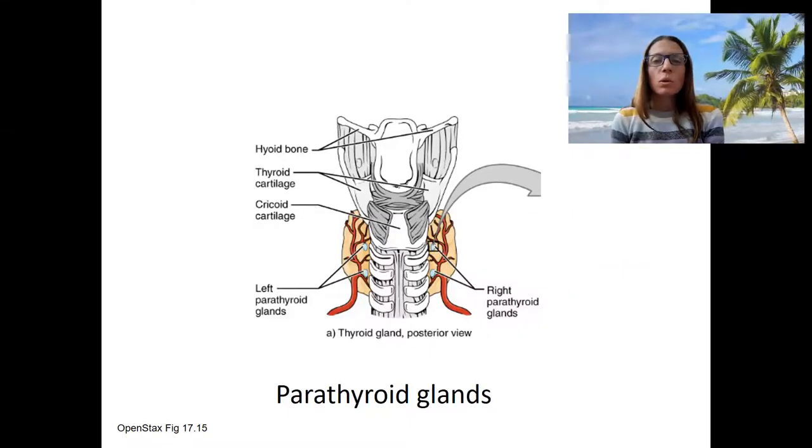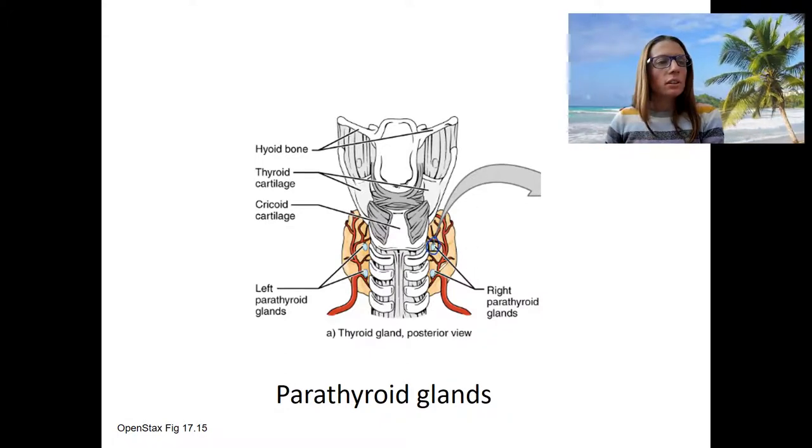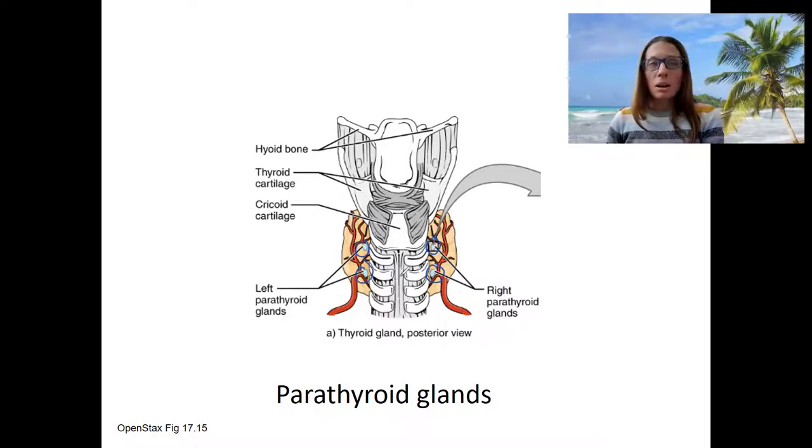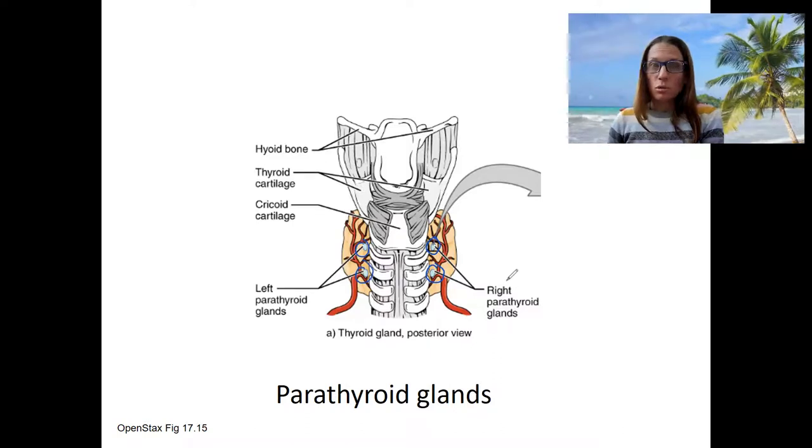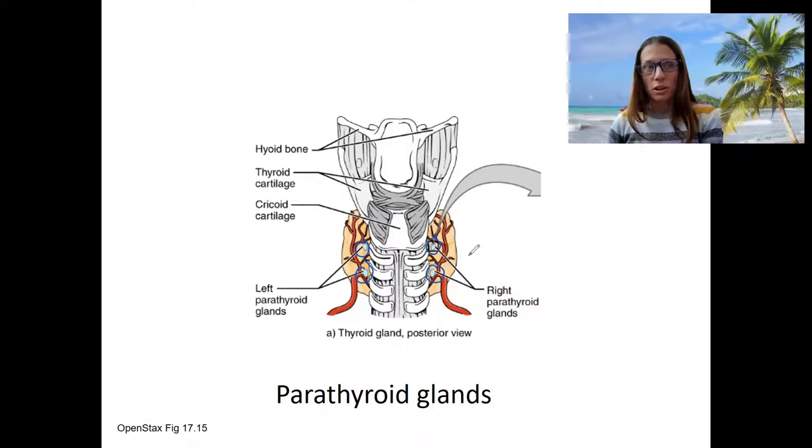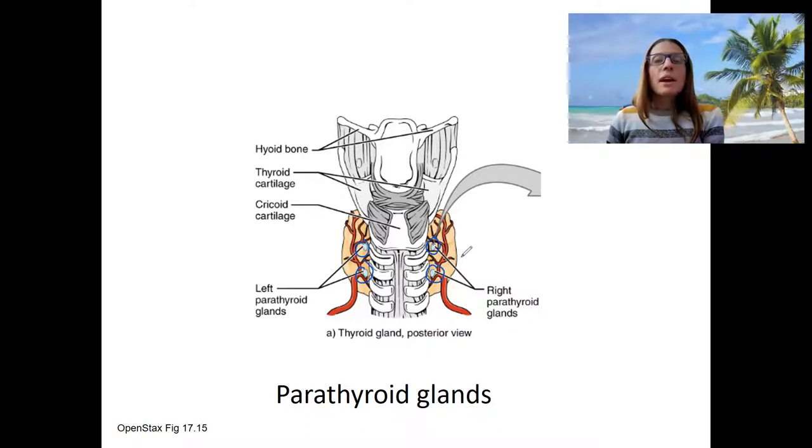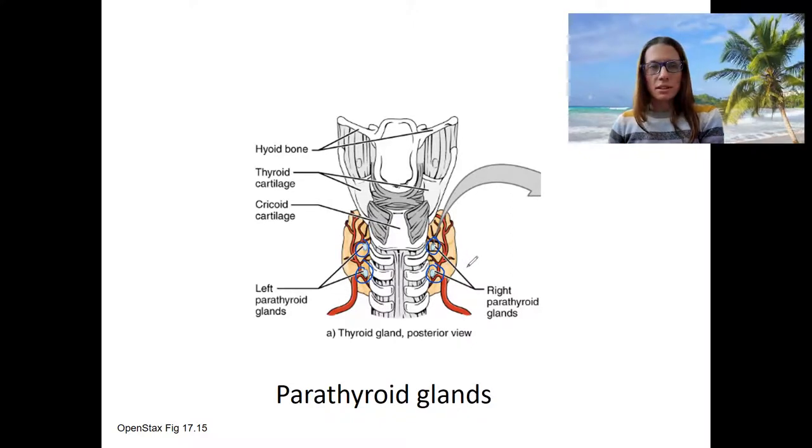The last endocrine organ for this week is the parathyroid glands. These are small little glands, four of them located on the thyroid. You will not be able to see this in the rat because they're so small. You can barely find the thyroid. They are involved in calcium homeostasis. That's their main function.